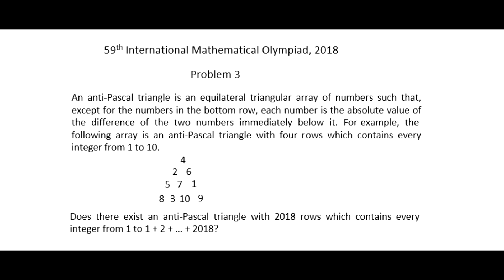Problem number three of the 2018 International Math Olympiad. An antipascal triangle is an equilateral triangular array of numbers such that, except for the numbers in the bottom row, each number is the absolute value of the difference of the two numbers immediately below it. The following array is an antipascal triangle with four rows which contains every integer from 1 to 10. Does there exist an antipascal triangle with 2018 rows which contains every integer from 1 to the sum 1 plus 2 plus ... plus 2018?